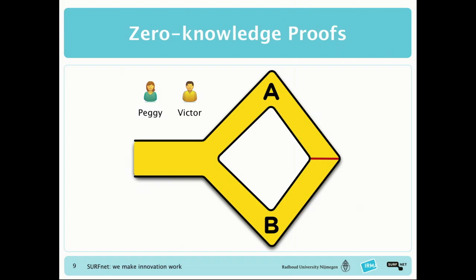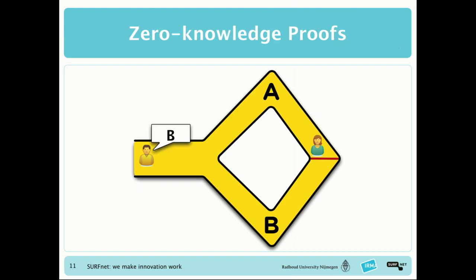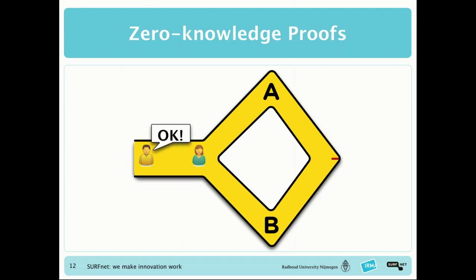Peggy goes into the cave and randomly picks a path to reach the door — in this case, path A. She goes to the back of the cave, and then Victor enters and randomly calls out one of the two paths, expecting Peggy to return through it. Victor says please return through path B, and because she has to open the door, that proves she knows how to open it. But since Victor cannot see the door, he doesn't know how she does it.